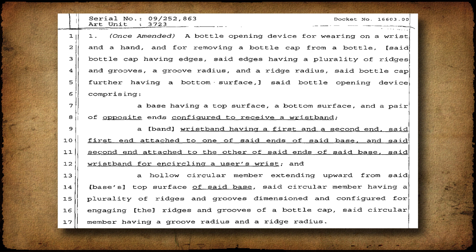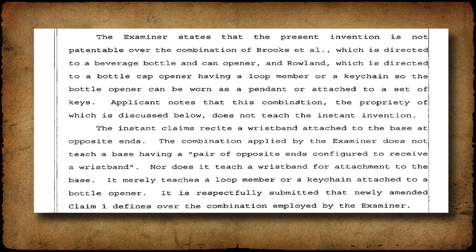In this case, the applicant removed the word 'band' and added underlined words all relating to a narrower type of band — a wristband. The type of wristband is also specified in this amendment: it is a wristband that attaches at opposite ends of the opener. It's not a bracelet-type band where the physical opener hangs off the band like a key on a keychain or a pendant. While this seems a straightforward and simple response to the patent examiner, it is where the estoppel is created.